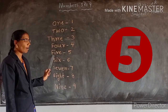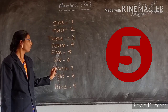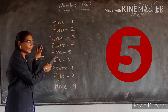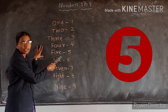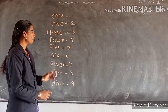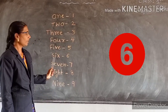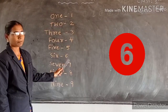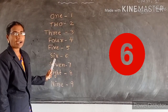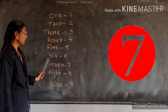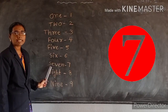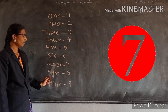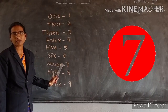Five. F, I, V, E. Five. F, I, V, E. Five. Five after number six. S, I, X. Six. S, I, X. Six. Six after number seven. S, E, V, E, N. Seven. S, E, V, E, N. Seven.